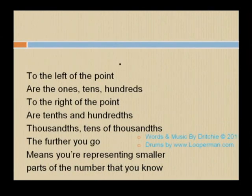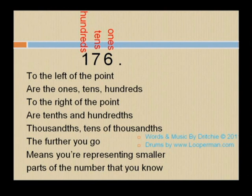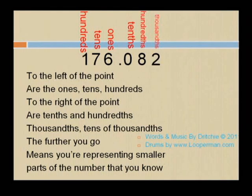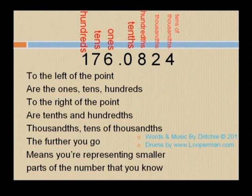To the left of the point are the ones, tens, hundreds. To the right of the point are tens and hundreds, thousands, tens of thousands. But there you go — representing smaller parts of numbers that you know.